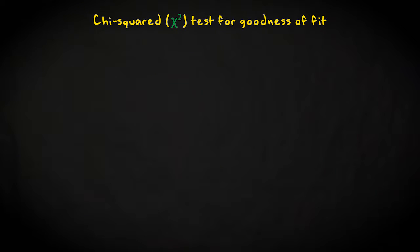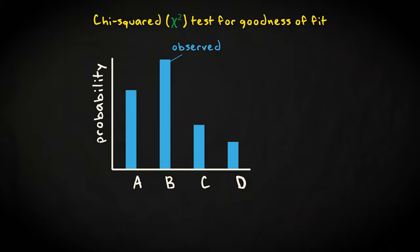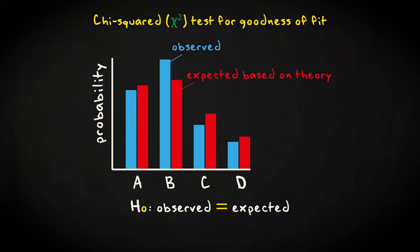The chi-squared test for goodness of fit is meant to compare an observed frequency distribution with a frequency distribution you expect on the basis of a theory. The null hypothesis is that the observed distribution doesn't differ from a theoretical one, and the alternative hypothesis states that they do differ.